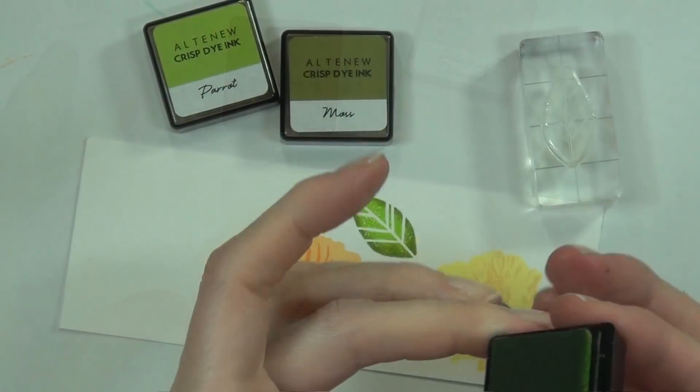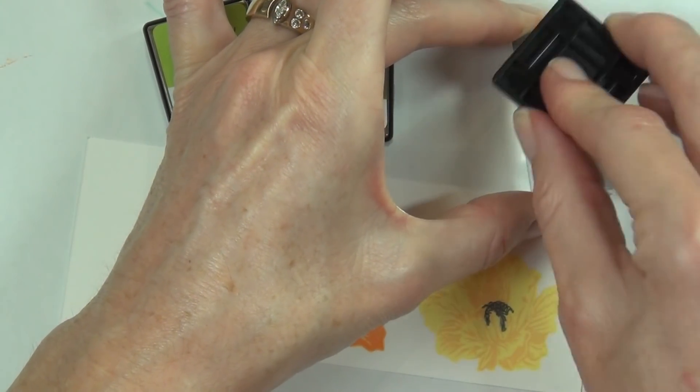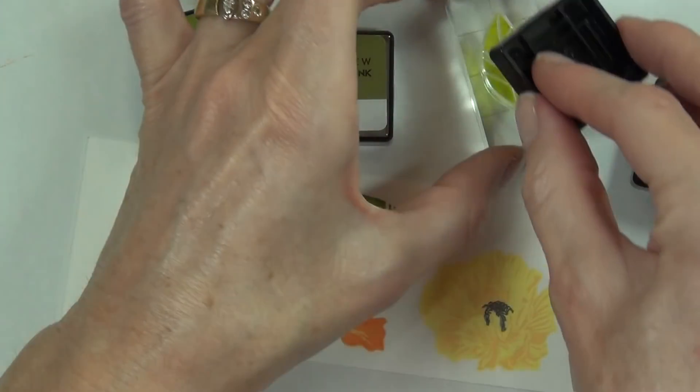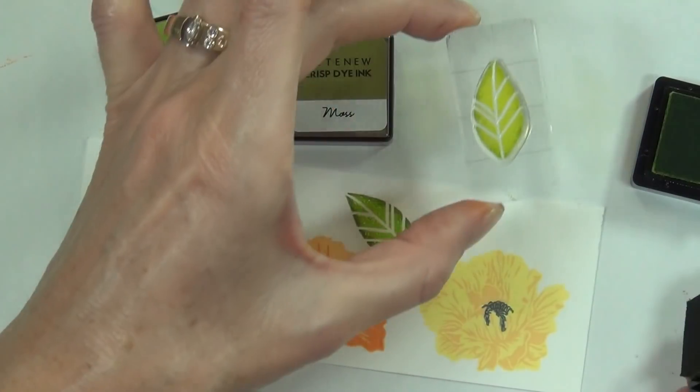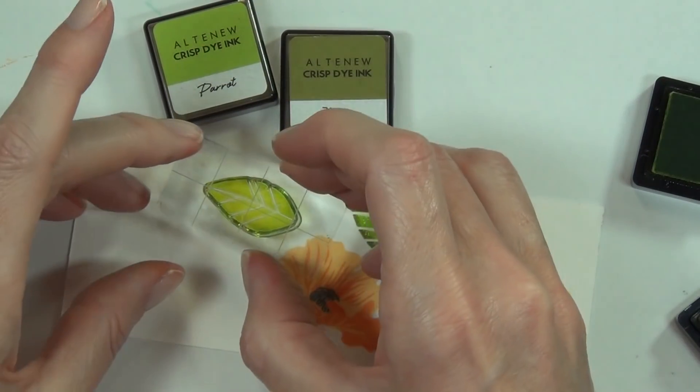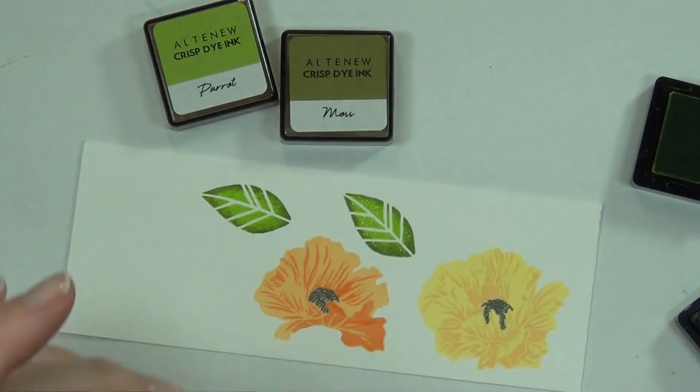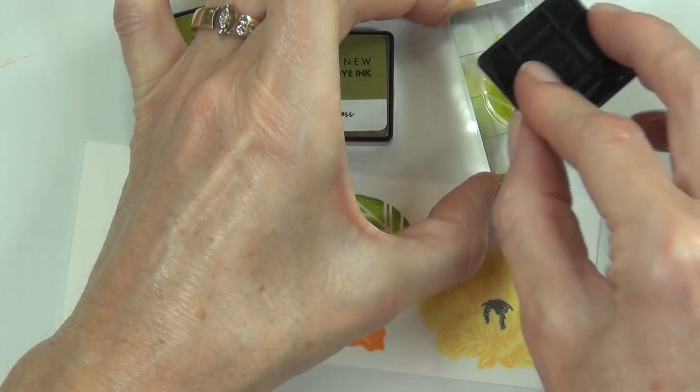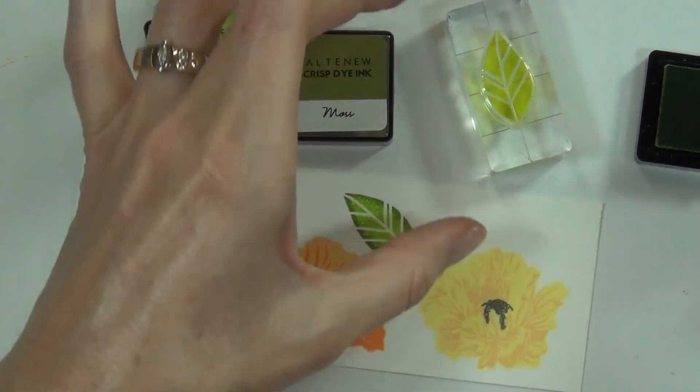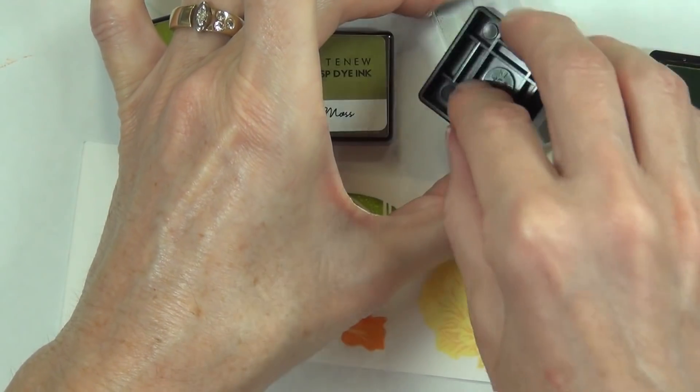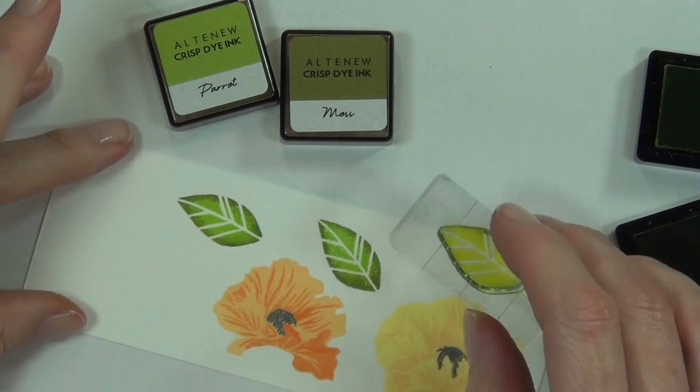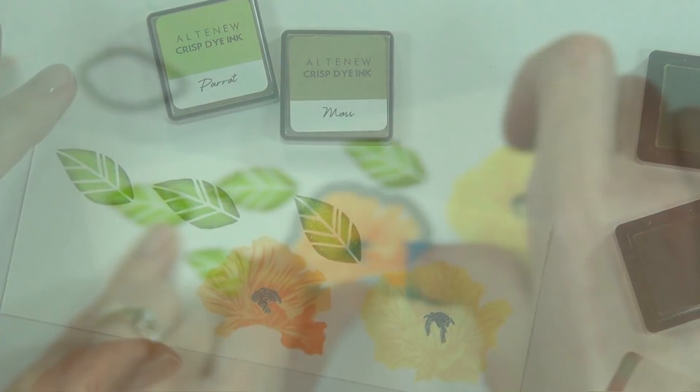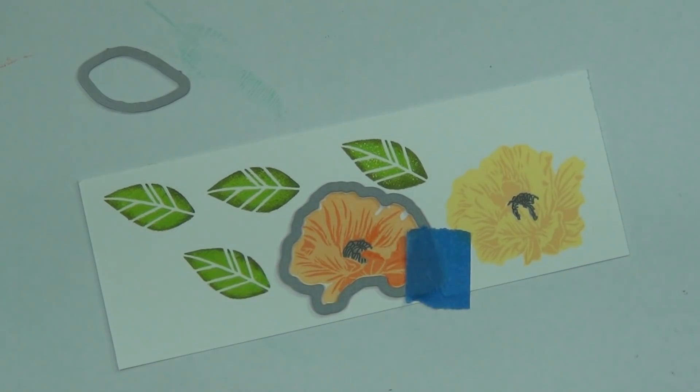These leaves are from the Rustic Botanical set and I created two tones in them by using the cubes of Altenew ink. You could do this with the bigger ink pads, just a little more difficult. I stamped the lighter color, which is Parrot, onto the leaf image and then stamped the edges with the Moss ink. I'm going to stamp three of those because we all know that odd numbers look good.